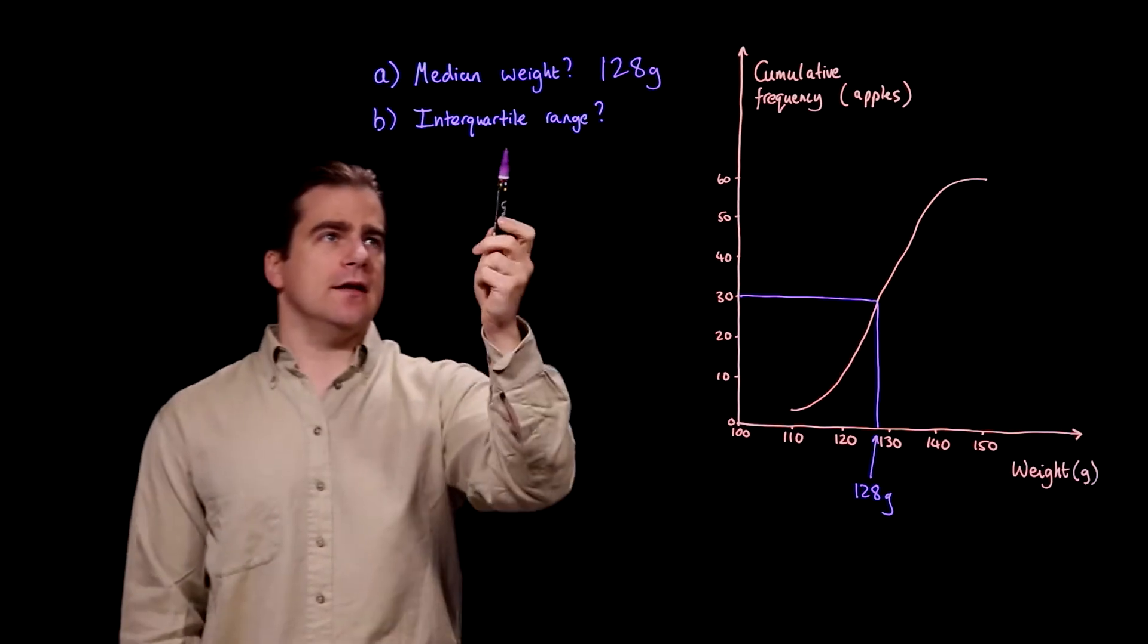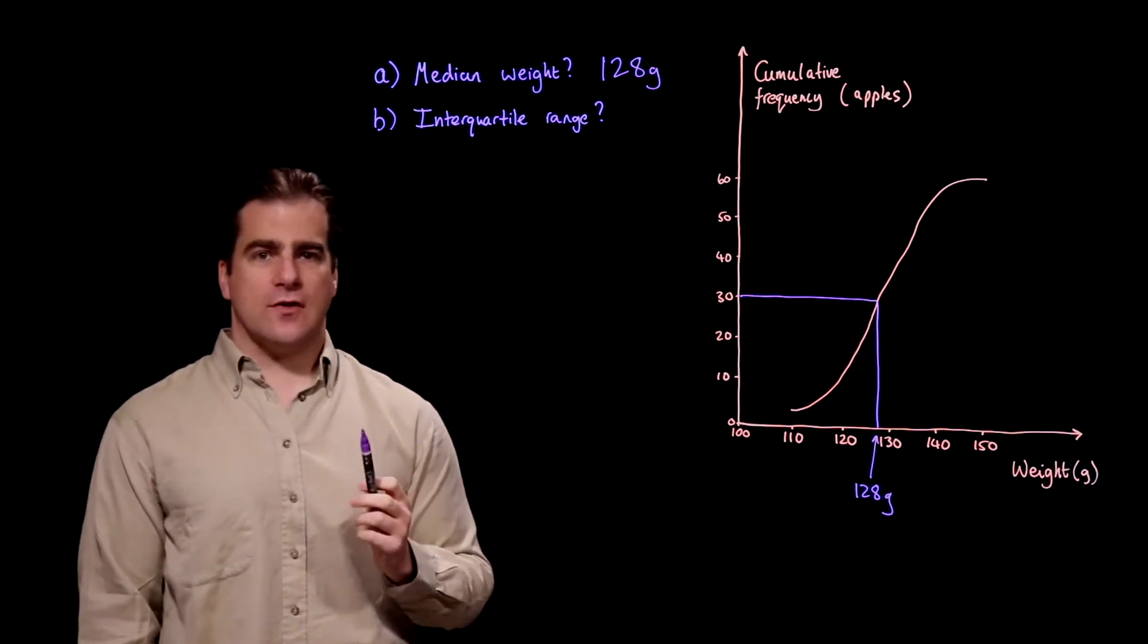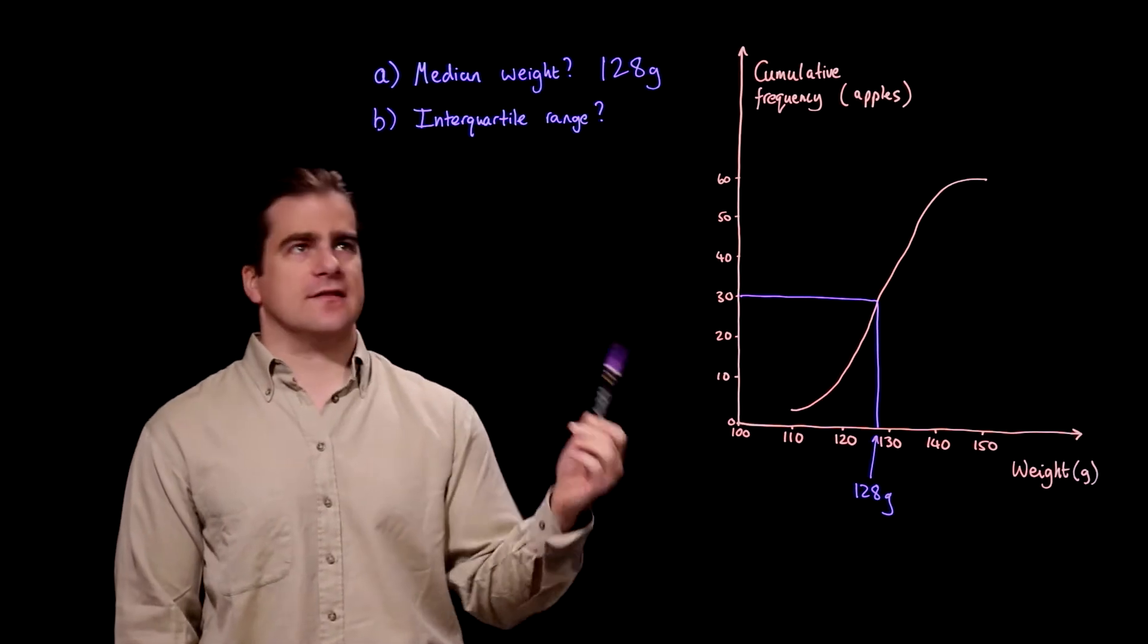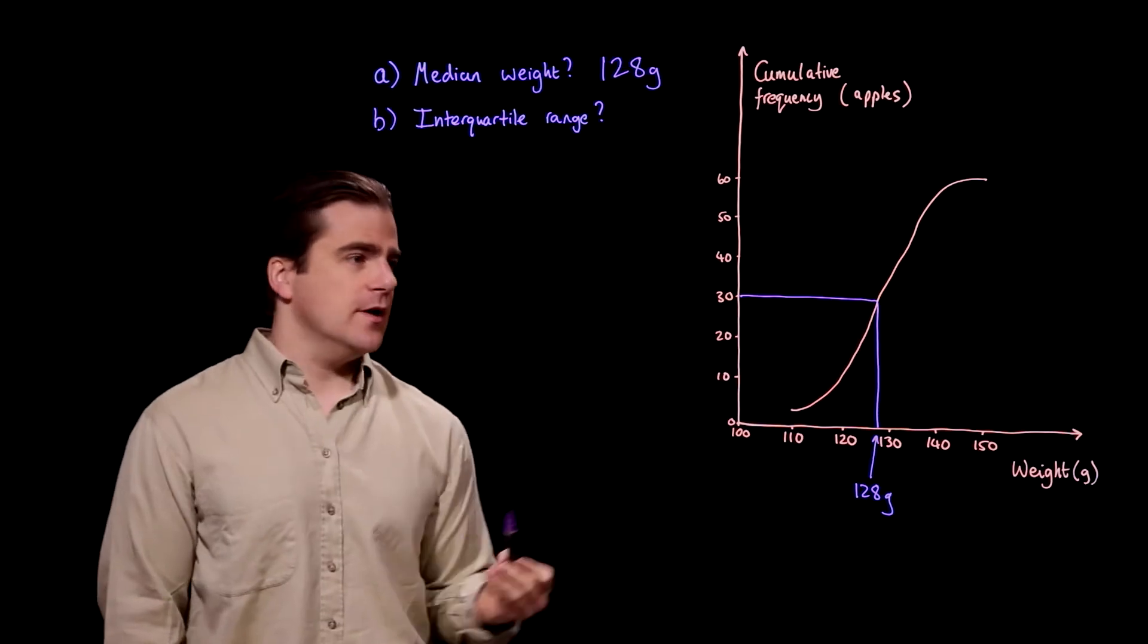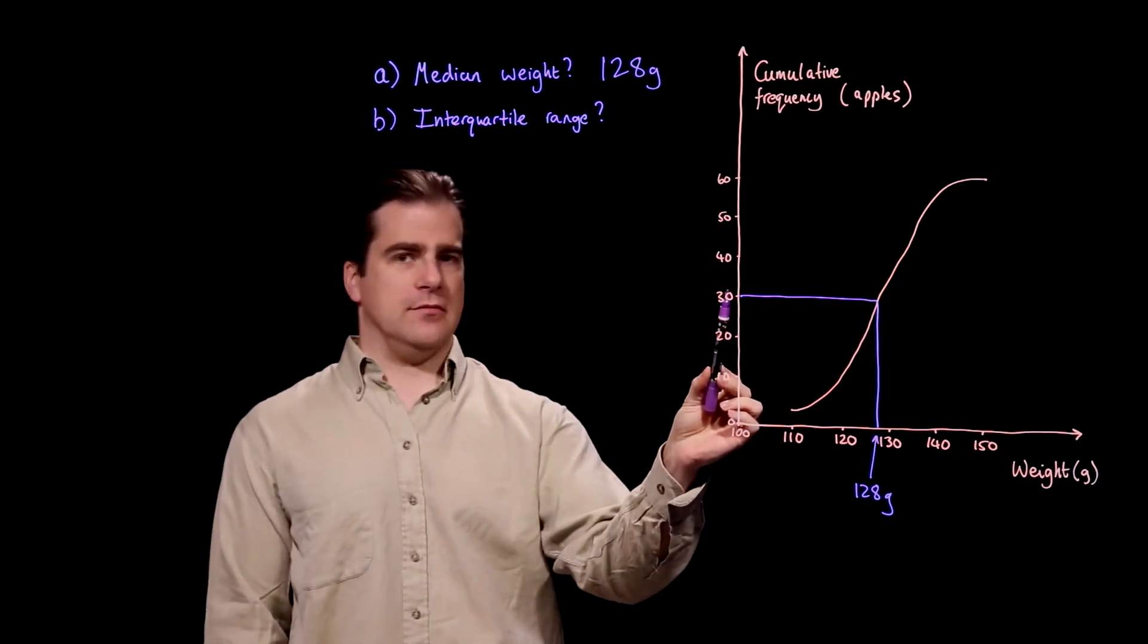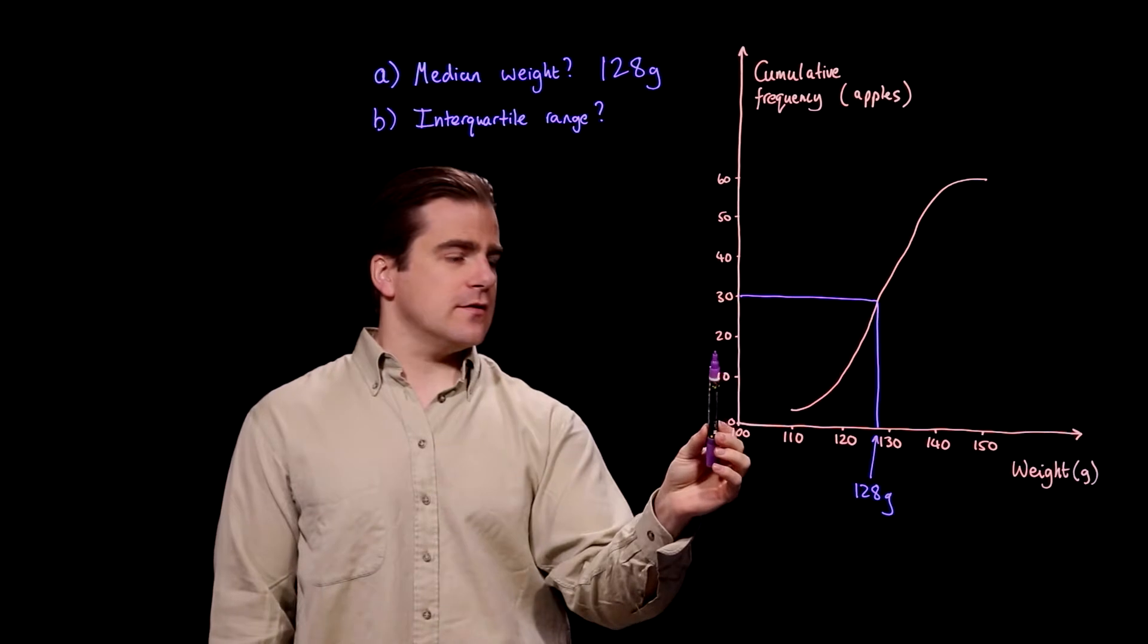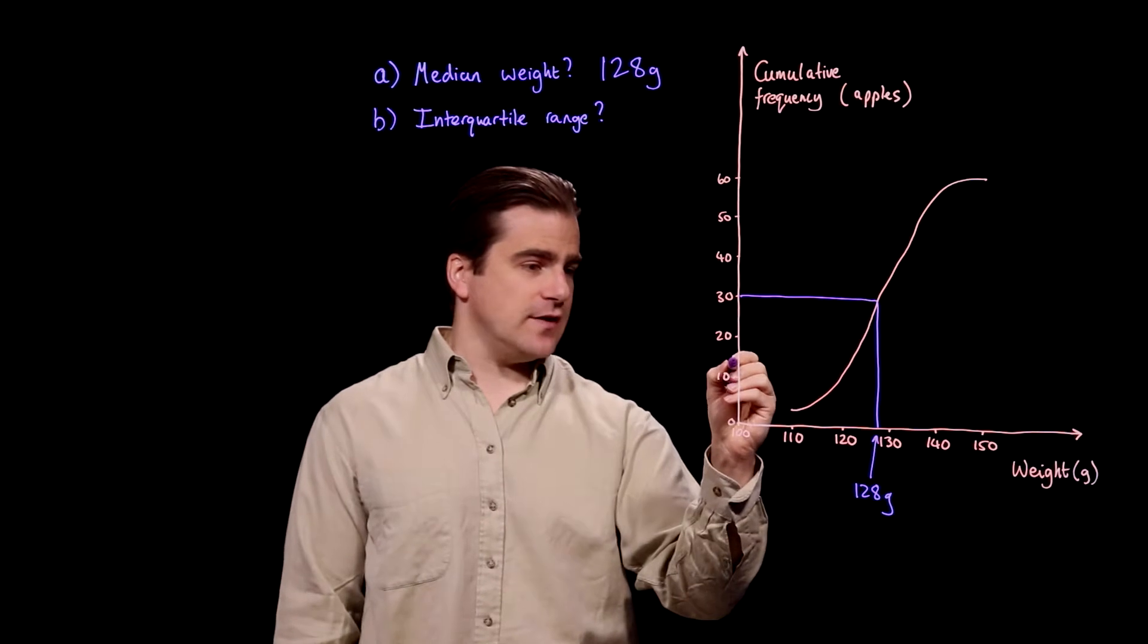Right, interquartile range. To find the interquartile range, you need to find firstly the lower quartile and then the upper quartile. It's the same thing as finding the median. You go across and down. But instead of the halfway number, instead of dividing by 2 to get 30, to find the lower quartile, you find the value that's a quarter of 60, which is 15.